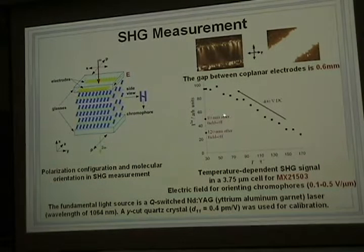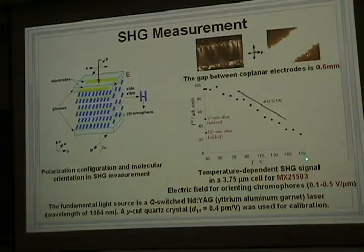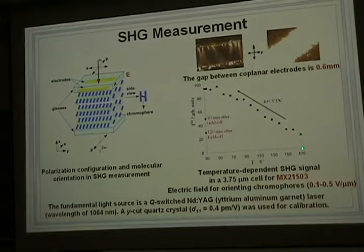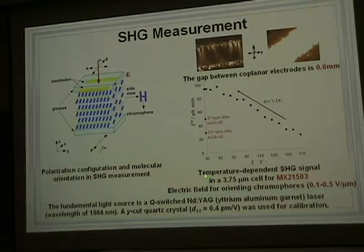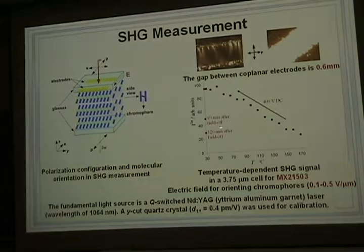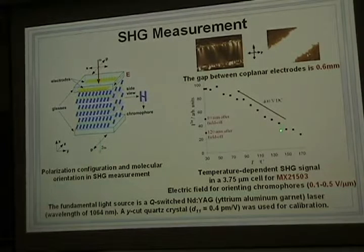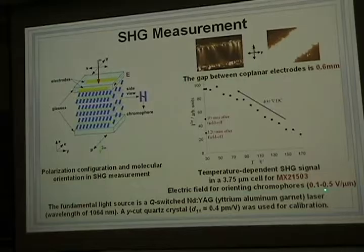In order to get the optimized temperature for SHG signals, we did temperature-dependent SHG signal measurements. When we applied 400 DC volts at 170 degrees, we started to observe the SHG signal. Then as the temperature decreases, the SHG signals increase, reaching a maximum at 150 degrees, and then remain constant until lower temperature. It is interesting to mention that at 30 degrees we switched off the electric field; after 10 minutes the SHG level dropped to the level observed at about 120 degrees, and after 2 hours it dropped to the level at 130 degrees.